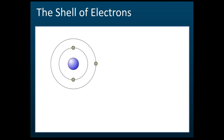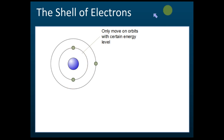The electrons only move on the orbits, or what we call the shells. Every shell has certain energy levels — we call these the shells of electrons.